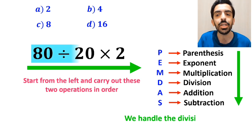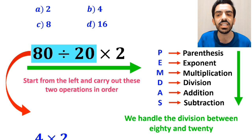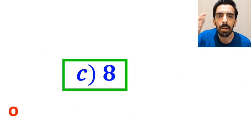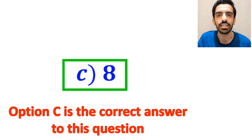So first we handle the division between 80 and 20, which simplifies this expression to 4 multiplied by 2. And finally, the answer becomes 8. Therefore, option C is the correct answer to this question.